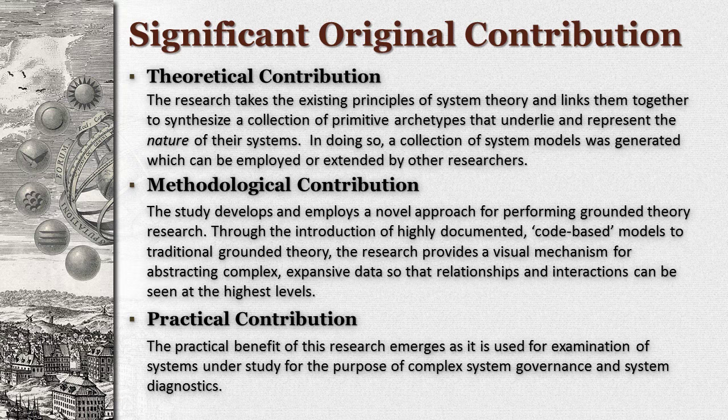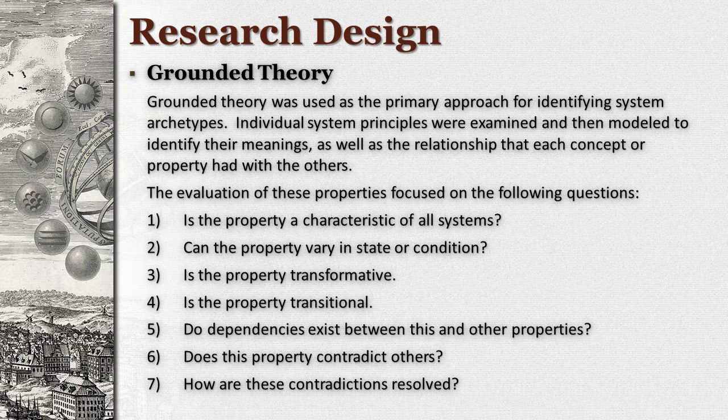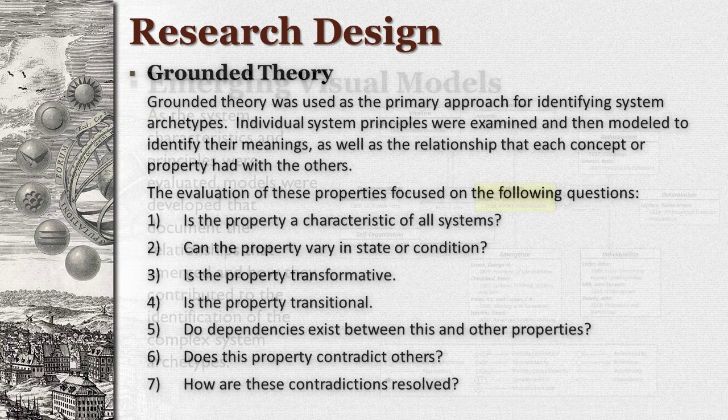In approaching the problem, the research design was guided by the principles of grounded theory. The research data came from the literature, and the literature search targeted the collected principles of system theory documented by Adams et al. Each system principle was examined and dissected in search of underlying relationships. The following questions guided the exploration: Is the property a characteristic of all systems? Can the property vary in state or condition? Is the property transformational, meaning if it changes, it alters the identity of the system? Is the property transitional, meaning if it changes, it alters the behavior of the system but not the system's identity?